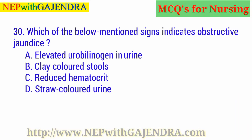Which of the below-mentioned signs indicates obstructive jaundice? A. Elevated urobilinogen in urine. B. Clay-colored stools. C. Reduced hematocrit. D. Straw-colored urine. The right answer is B: Clay-colored stools.